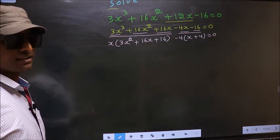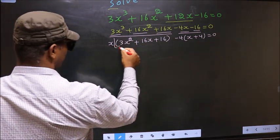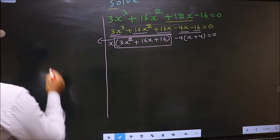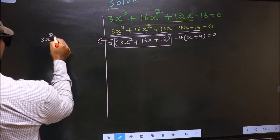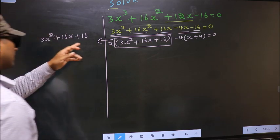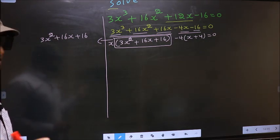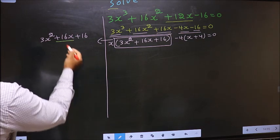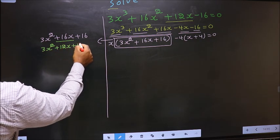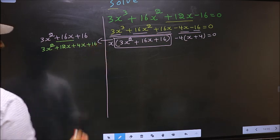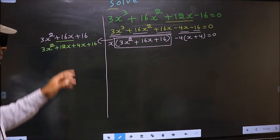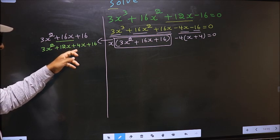In this equation we have come across a quadratic. I will factorize the quadratic: 3x squared plus 16x plus 16. To factorize this we should split the middle term, that is plus 16x. So in place of plus 16x, I write plus 12x plus 4x plus 16.